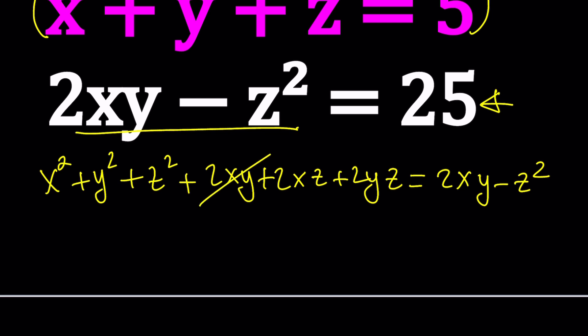First of all, 2xy is going to cancel out, and then we can go ahead and put the z on the left-hand side. That's going to give us x squared plus y squared plus 2z squared, z squared plus z squared, plus 2xz plus 2yz equals 0.